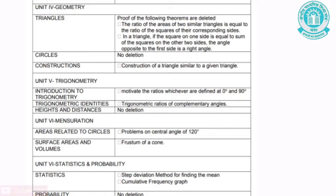The second chapter under this unit is Circles — there is no change in this chapter. The third chapter under this unit is Construction. The topic removed from Construction is Construction of a Triangle Similar to a Given Triangle.